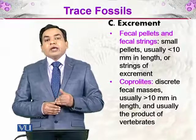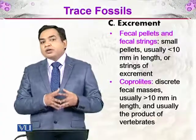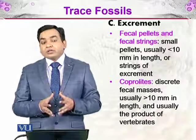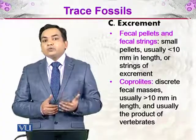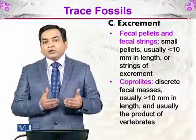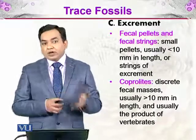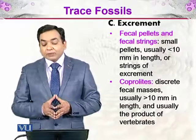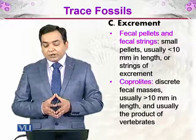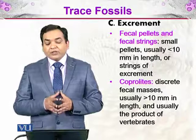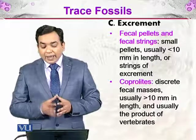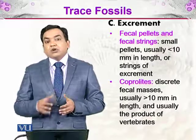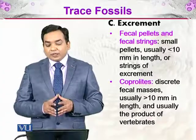Excrement is something that comes out of the body of an organism and becomes part of the environment. Sometimes it decomposes and sometimes it does not; if it is not decomposed properly and turns into a fossil, that is called a trace fossil. Small pellets usually less than 10 mm in length are called fecal pellets or fecal strings, while discrete fecal masses usually more than 10 mm — typically the product of vertebrates — are called coprolites.